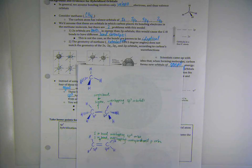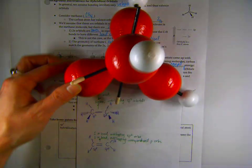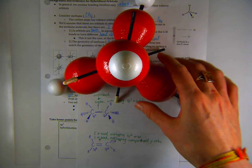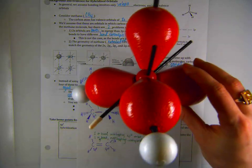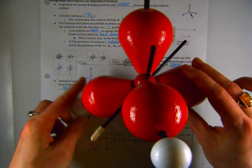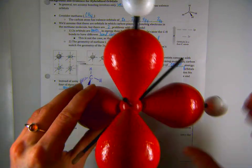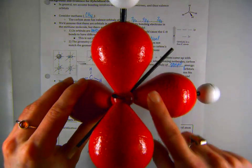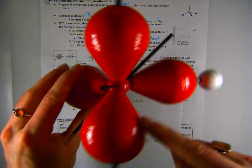Let's look at a representation of this using the model. Here is my representation of methane. And here's what's happening with this model. The central carbon atom is here, and the bonded hydrogens are represented by the little white structures at the edges of the model.